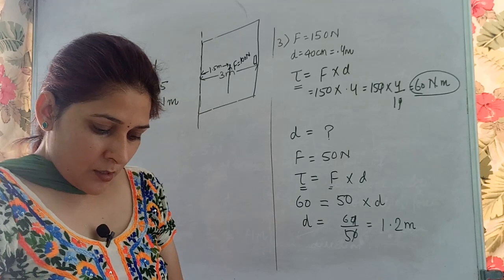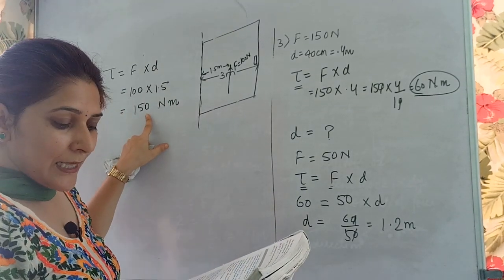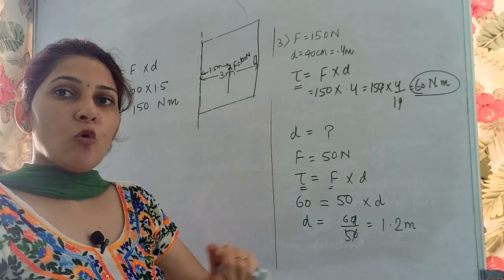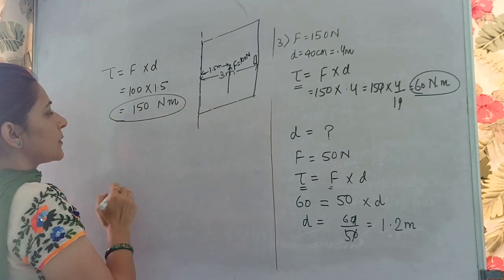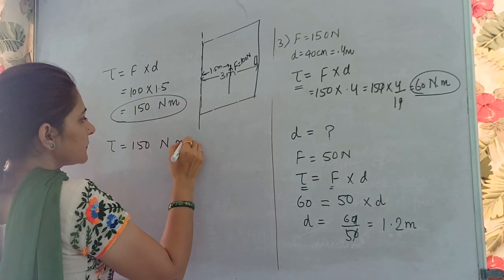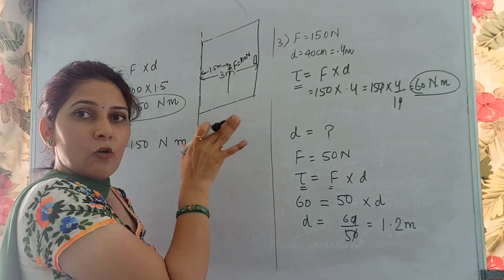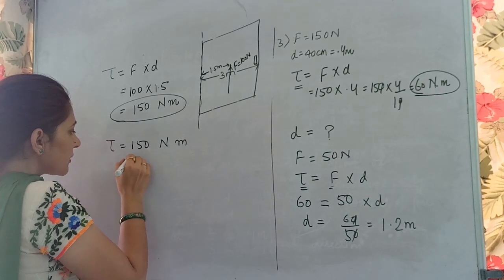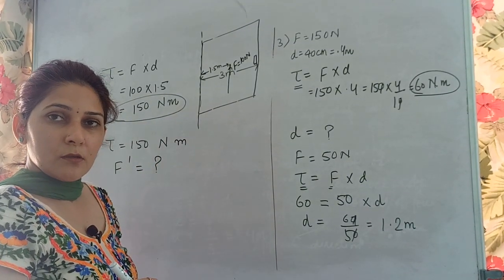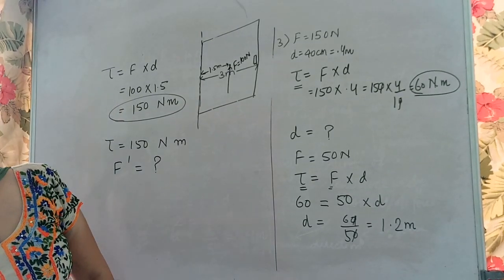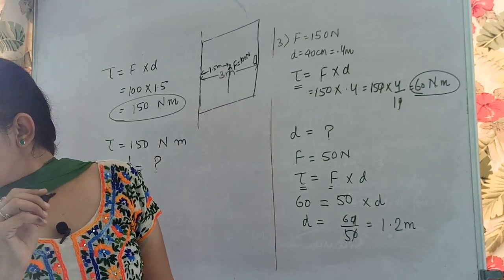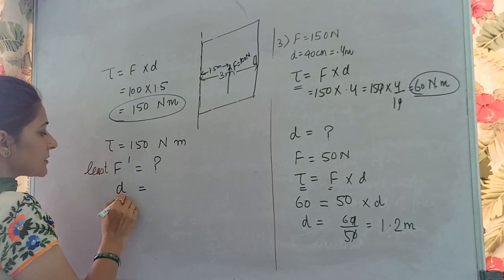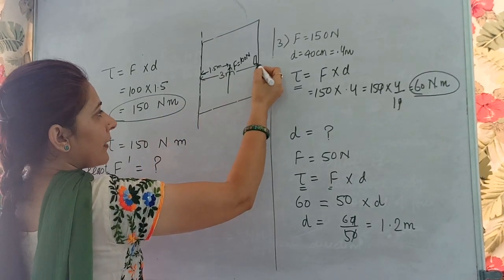For the second part, we need to find the least force and its point of application to open the door. To open the door, 150 newton meters of turning effect is required, as calculated in the first part. To apply the least force, the distance must be maximum. The force should be applied at the handle, which is at 3 meters from the hinge.